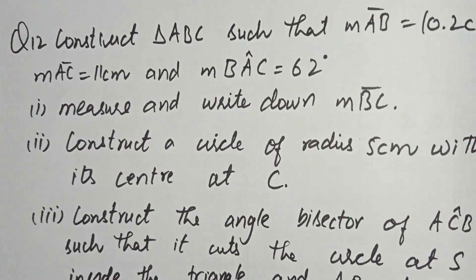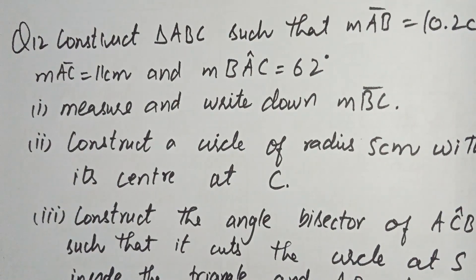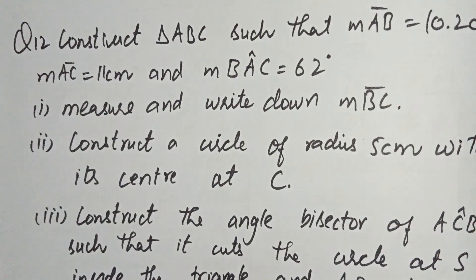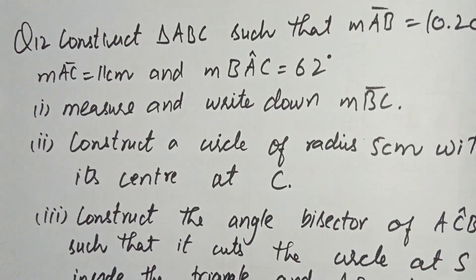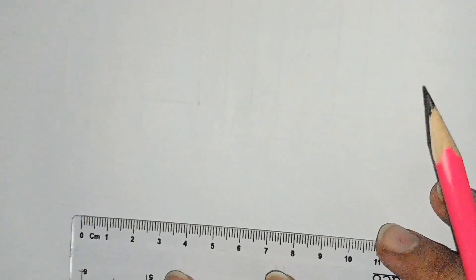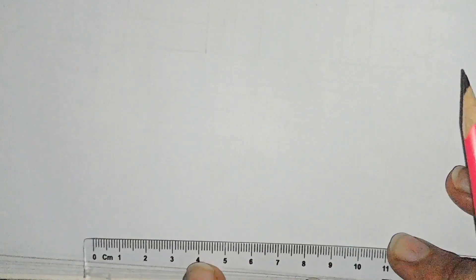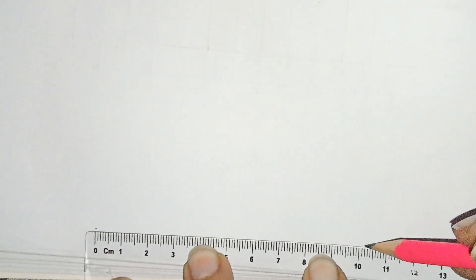Question number 12: Construct triangle ABC such that AB is 10.2 cm, AC is 11 cm, and angle A is 62 degrees. First, we have to construct the triangle. Using the ruler, I draw the line of 10.2 cm from 0 to 10.2 cm. This line is AB, 10.2 cm.